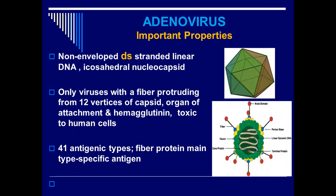Now let's look at the important properties of the adenovirus. It is a non-enveloped, naked, double-stranded, linearly-configured DNA virus. It is non-enveloped and has an icosahedral capsid with 20 faces. It is the only virus which has a fiber that protrudes from its vertices.